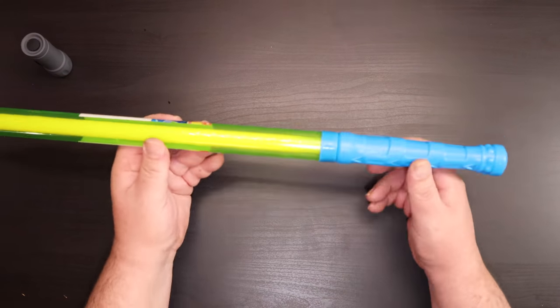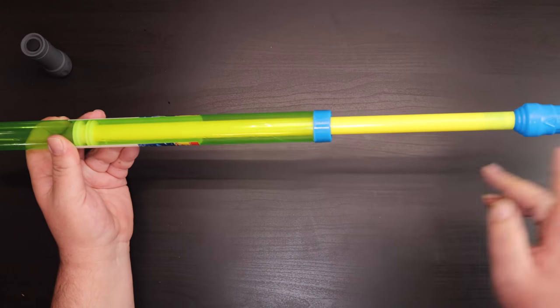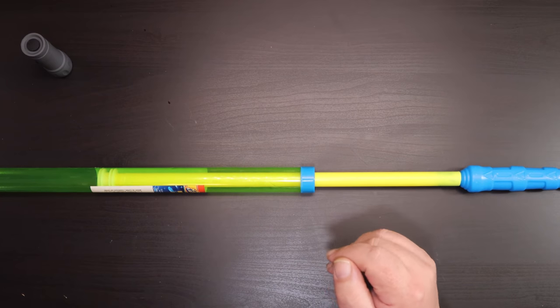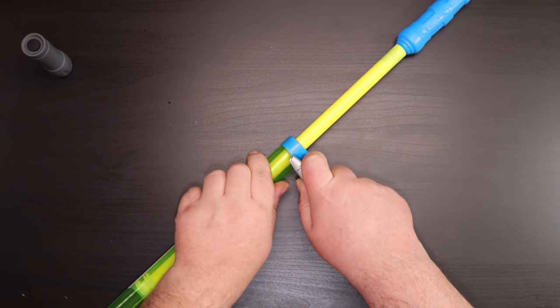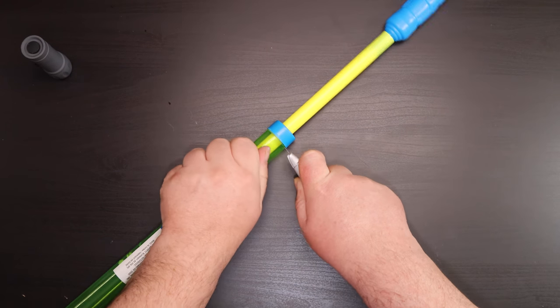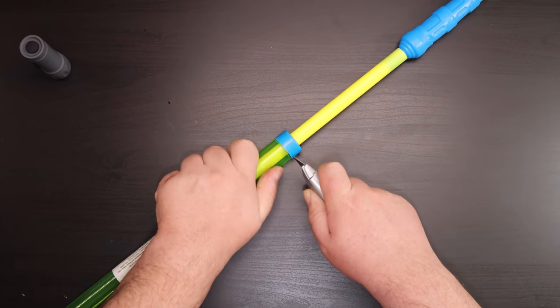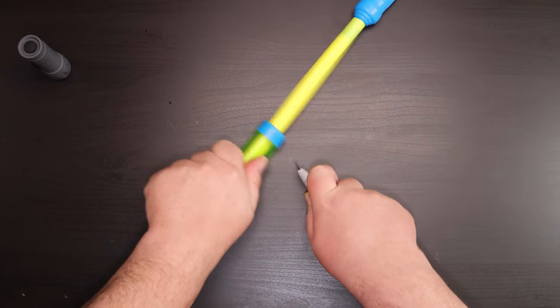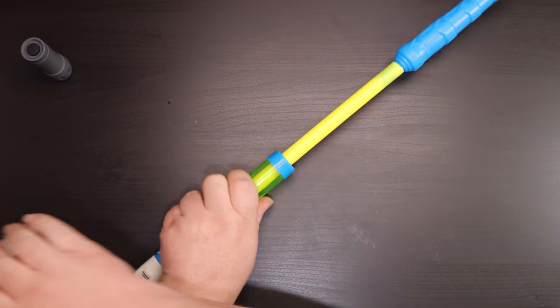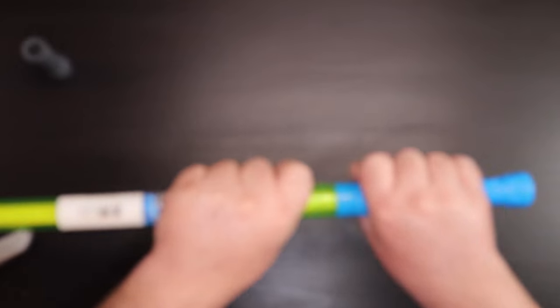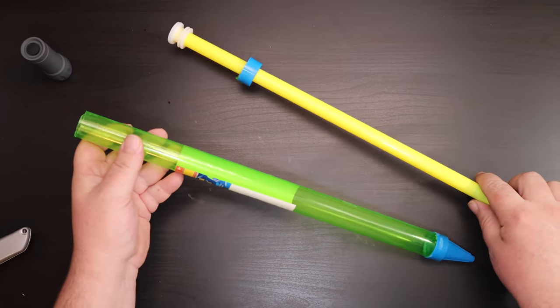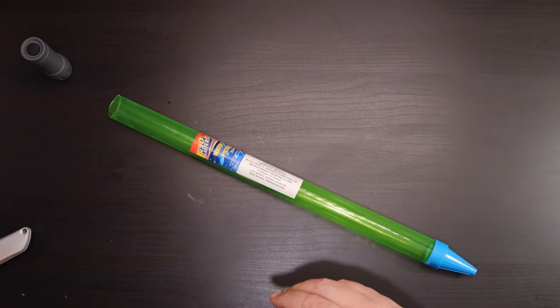We're going to have to do one little modification to the H2O blaster. We're going to take our box knife and we're going to score around the end here, being careful not to nick a finger. Close it and give it a couple good whacks and it should break right apart.